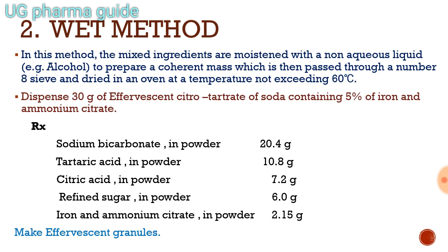The wet method: in this method, the mixed ingredients are moistened with a non-aqueous liquid, for example alcohol, to prepare a coherent mass, which is then passed through a number 8 sieve and dried in an oven at a temperature not exceeding 60 degrees Celsius.